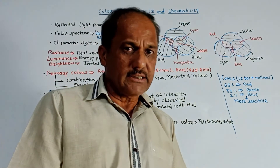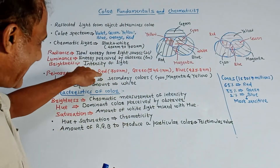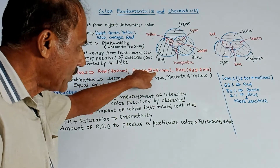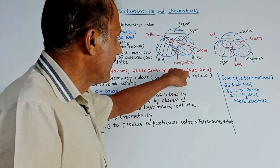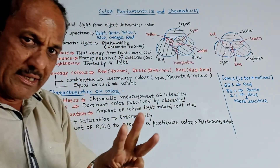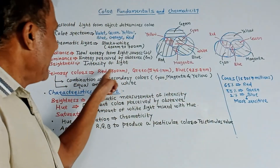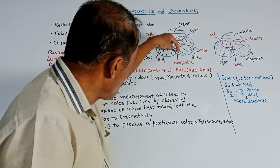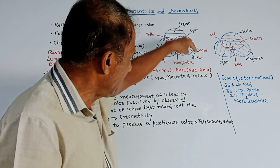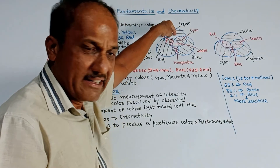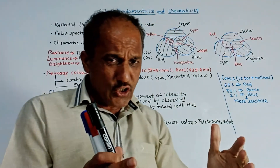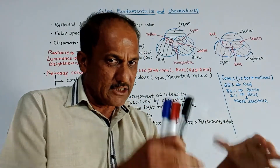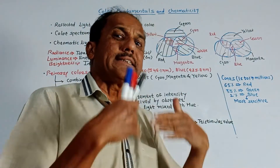As far as colors are concerned, there are three primary colors: red with wavelength 700 nanometers, green with wavelength 546.1 nanometers, and blue with wavelength 435.8 nanometers. Please refer to the diagram here. I have drawn three circles — one for red color, one for blue color, and one for green color. The combination of these three colors, that is R, G, B — red, green, and blue — produces another three colors, which are the secondary colors.